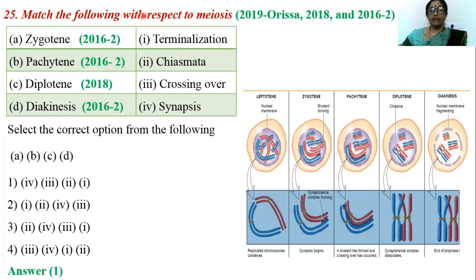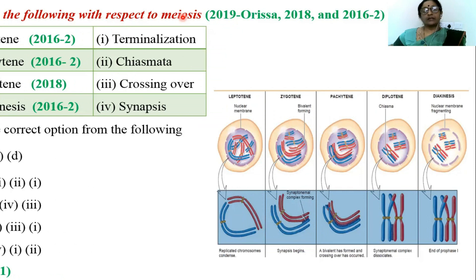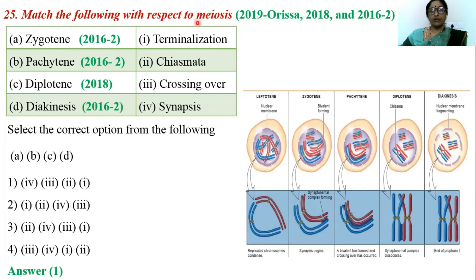Question number 25: match the following with respect to meiosis. In living beings, different types of cell divisions are present — mitosis, meiosis, and mitotic divisions, of which mitosis and meiosis play an important role. Mitotic division occurs in somatic cells, whereas meiosis occurs in gametic cells and is involved in the production of gametes. Meiosis is differentiated into two types: meiosis I and meiosis II.